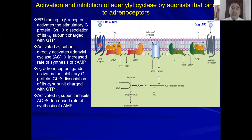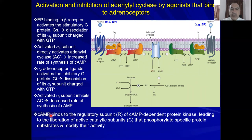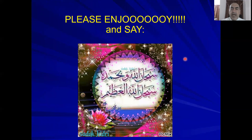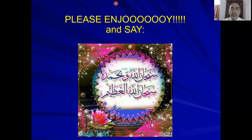For beta receptor signaling via Gs: activation of beta receptors activates the Gs protein — converting it to GTP status — which activates adenylate cyclase. This increases cyclic AMP, which activates protein kinase A, leading to phosphorylation of different proteins and the ultimate biological effect. That's it for now — enjoy and talk to you later.